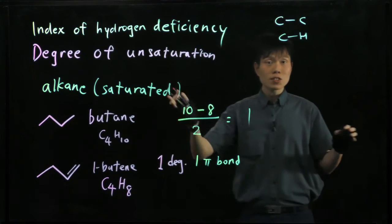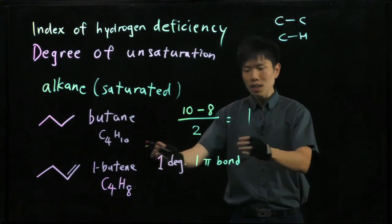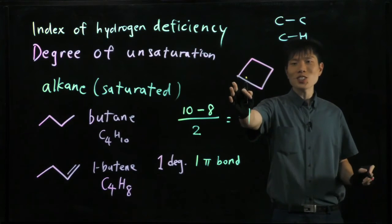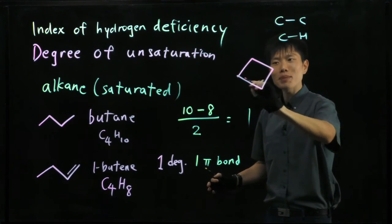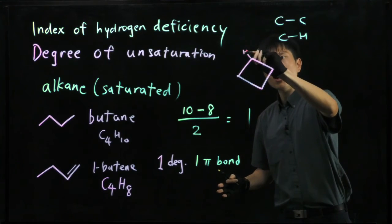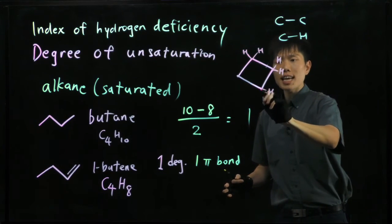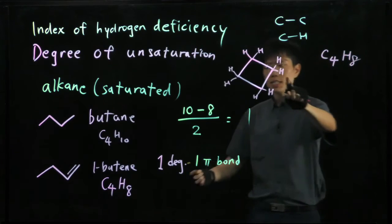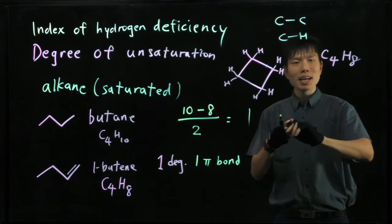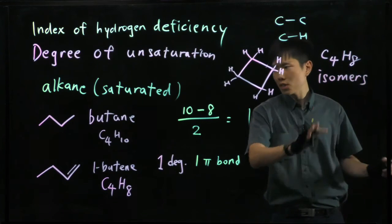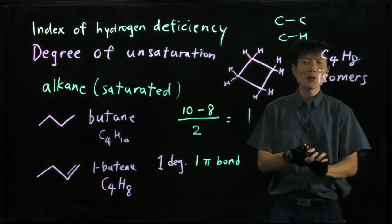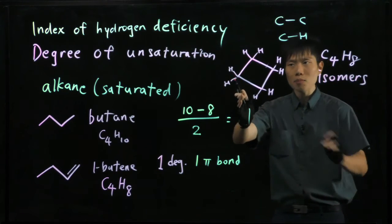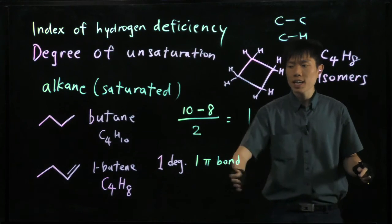These degrees of unsaturation arise from 2 occasions. We have seen that it could come from a pi bond. Or, in this case — this shape is not just an ordinary square or diamond; every junction is a carbon atom, so there are 4 of them. If you draw out all the hydrogen atoms, this gives you the same chemical formula of C4H8. What does this tell you between these two molecules? Different drawings but the same molecular formula — we call them isomers. In this case, I do not see a pi bond, but we still have 1 degree of unsaturation. That means the degree comes from a ring — 1 enclosed ring also contributes a degree of unsaturation.